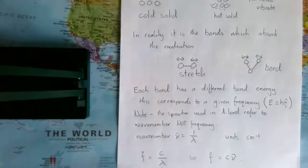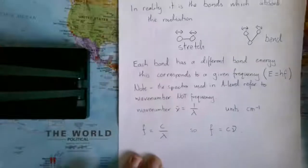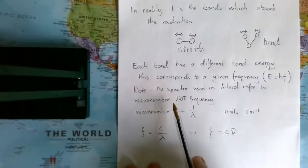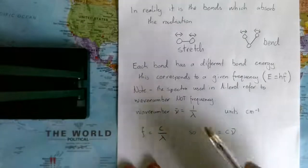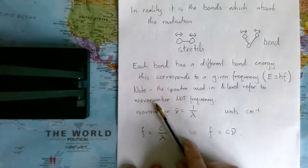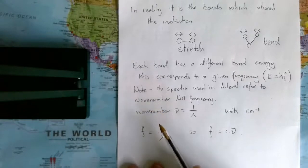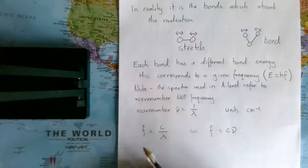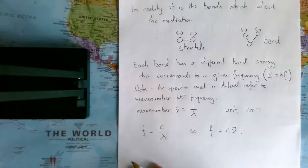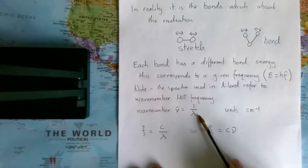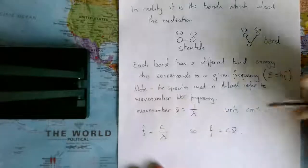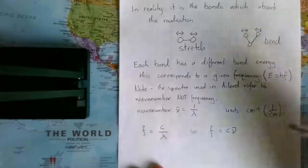Just a quick note, you're not going to get the tables and spectra showing frequency. Instead, they're going to refer to something called wavenumber. Wavenumber, which is given this symbol, is simply the reciprocal of wavelength. So the units are centimeters to the minus one, or if we think about it, one over centimeters.